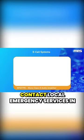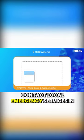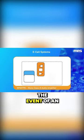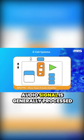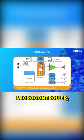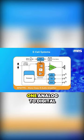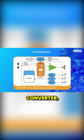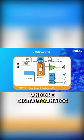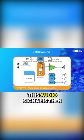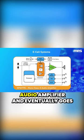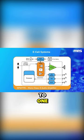E-call systems are designed to contact local emergency services in the event of an accident. In these systems, the front end of the audio signal is generally processed through a codec, comprised of one microcontroller, one analog-to-digital converter, or ADC, and one digital-to-analog converter, or DAC. This audio signal is then fed through the Class D audio amplifier and eventually goes to one speaker.